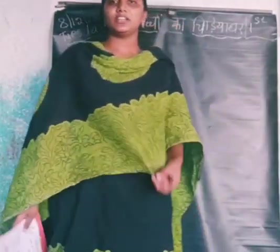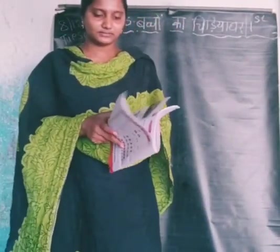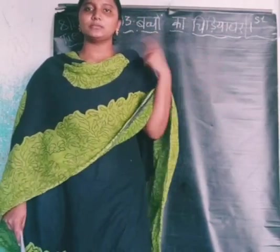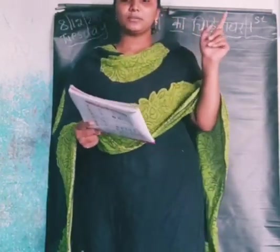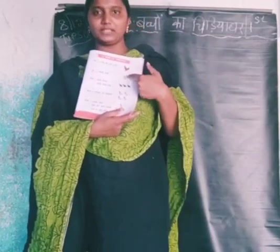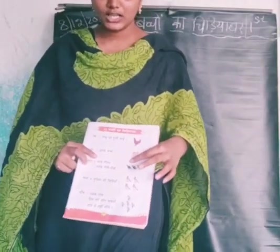Murgu means hen — kodi. Kodi ni Murgui antaam. Ramu's hen had two chicks. Ramu yokkak kodi urchindhi — Ramu's hen laid eggs and had two chicks. Dhani yokkak randu pillalu — two children of that hen.